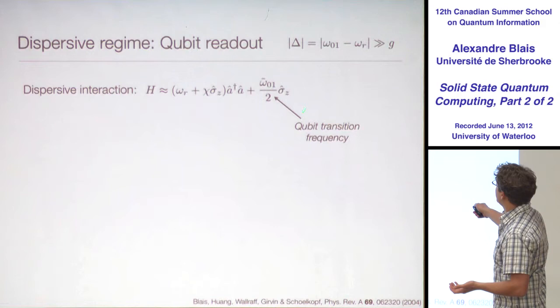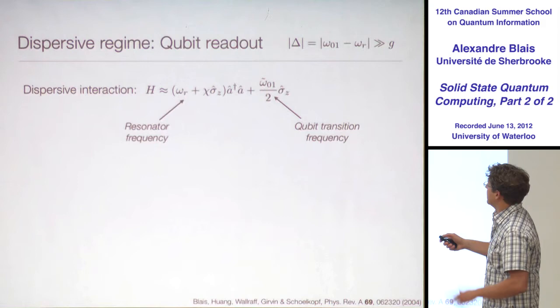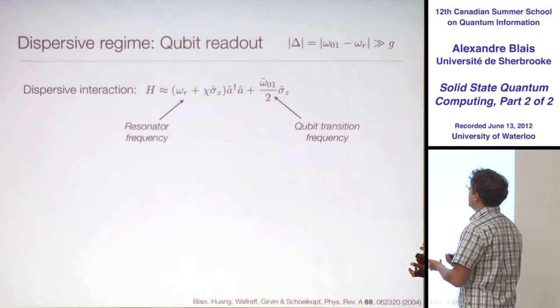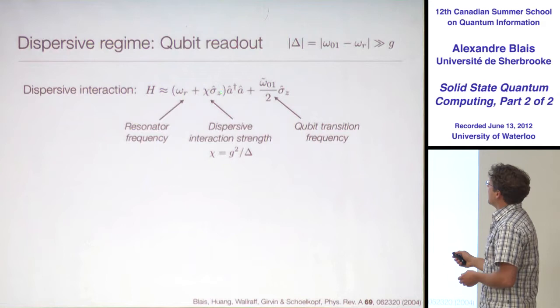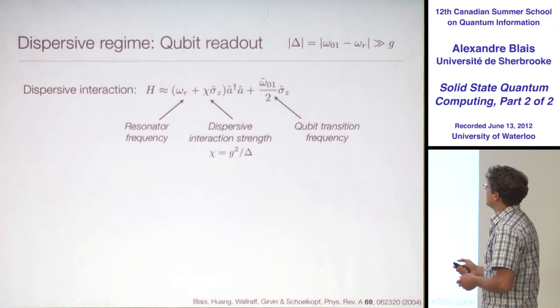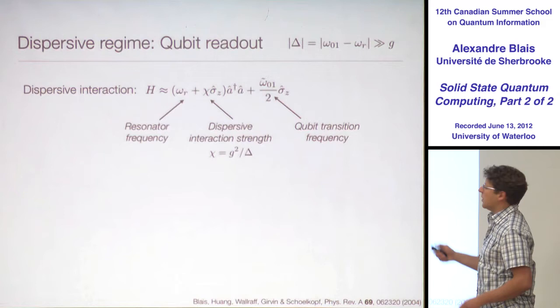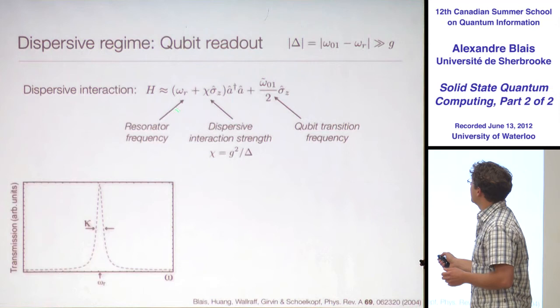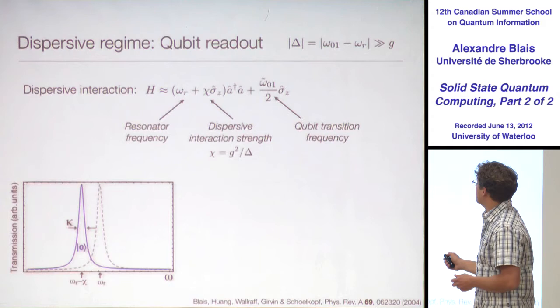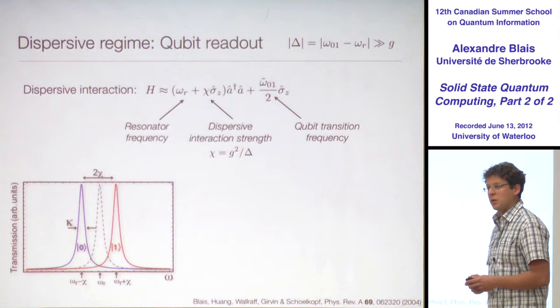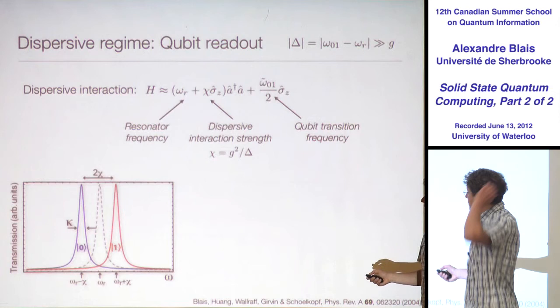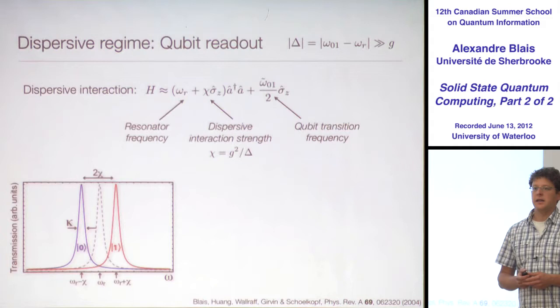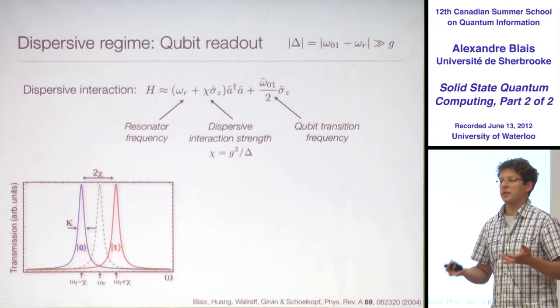In the dispersive Hamiltonian, the resonator sits at its omega_r frequency, but now there's a new term: a coupling of a-dagger a times sigma-z, where chi = G²/delta. The resonator frequency now depends on the qubit state: if the qubit is in its ground state it's pulled down by minus chi, if in the excited state it's pulled up by plus chi. You have two different cavity frequencies, and if you can resolve them, you've measured the state of the qubit.